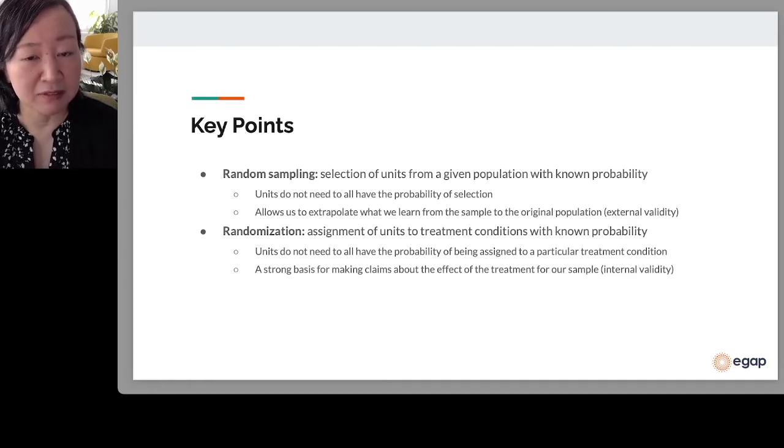In other words, it gives us a really strong basis for a claim of external validity. Randomization, by contrast, is about the assignment of units to treatment conditions with known probability. And those units could be a random sample, but it could be any other kind of sample, however you got them.